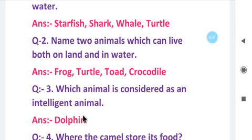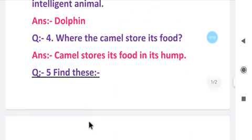Question number 4: Where does the camel store its food? Answer: Camel stores its food in its hump. Camel stores food in its hump. Hump is a body part on the camel. I will show you the picture of camel.